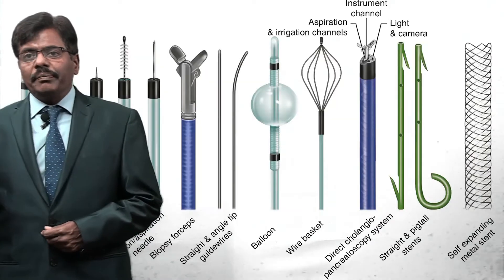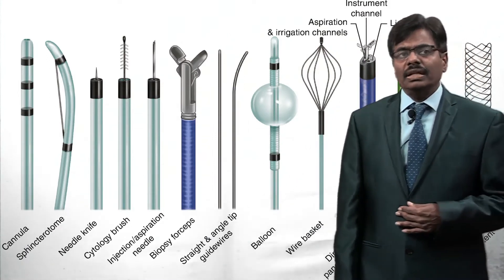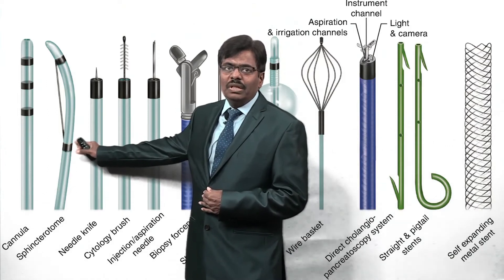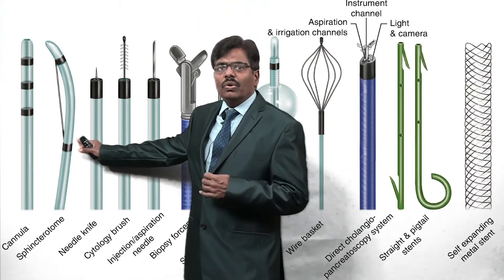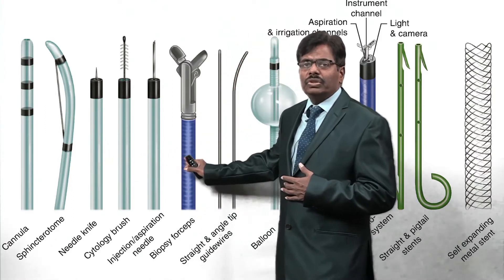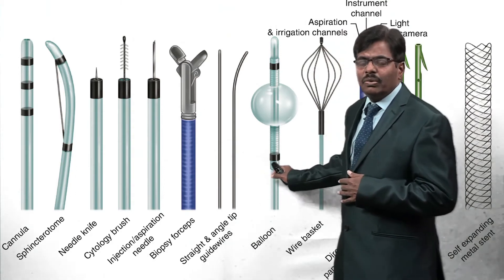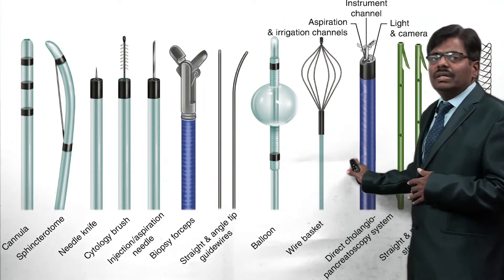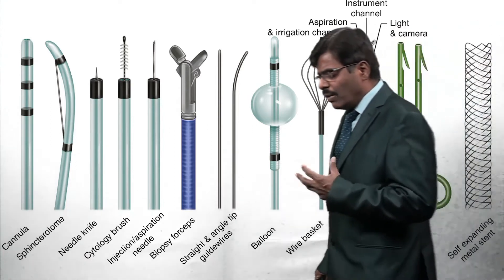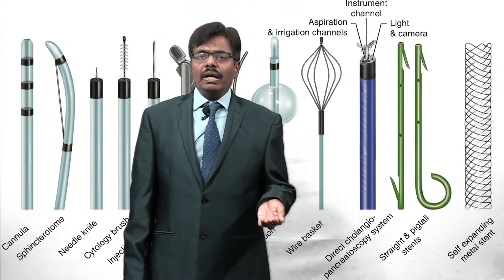There are plenty of accessories available. Starting from the bow-wire sphincterotome — short nose and long nose variants — a needle knife, biopsy forceps for peri-ampullary lesions, various hydrophilic guidewires, biliary balloon, Fogarty balloon, Dormia basket (six-wire and four-wire), and SpyGlass. There are also two types of stents: the pigtail stent, which avoids migration and is very important, and the self-expanding metal stent, which may be required in cases of malignant stricture.